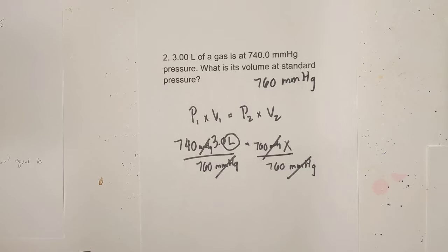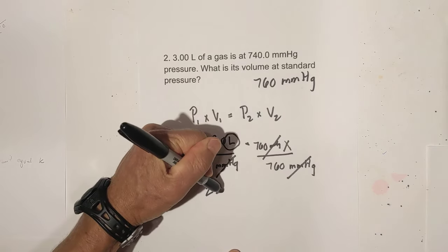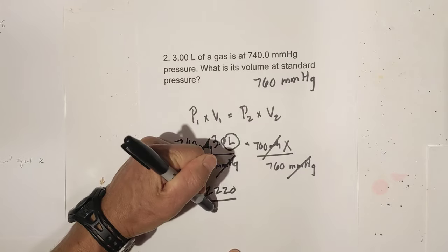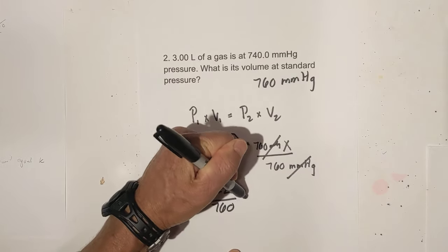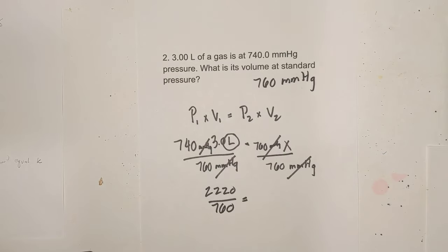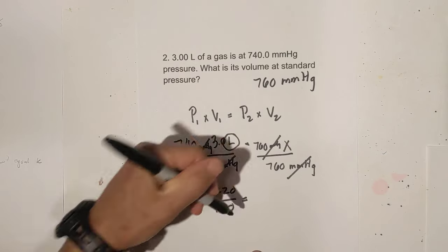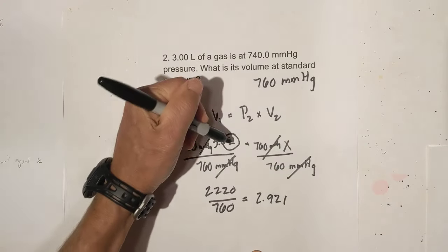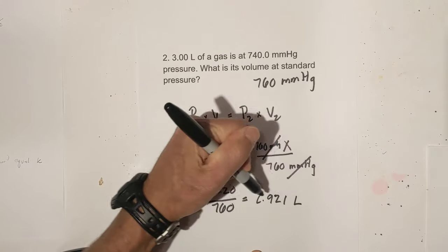You're going to be left with liters. Now what I do is I take 740 times 3. 740 times 3 equals 2,220, and I'm going to divide that by 760, and that gives me an answer of 2.921. What is my unit of measure? It is liters. It is volume.